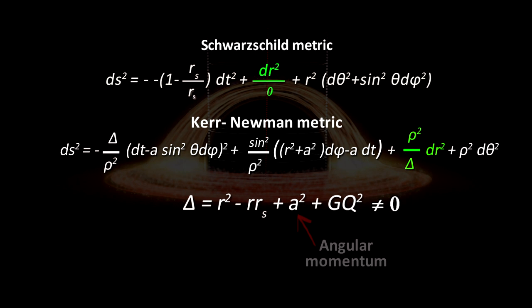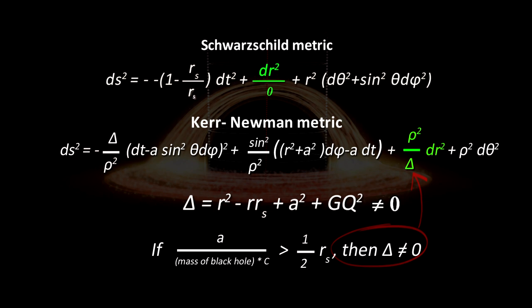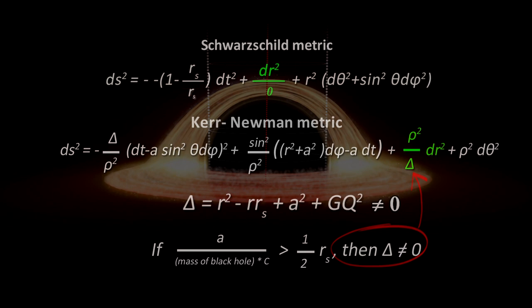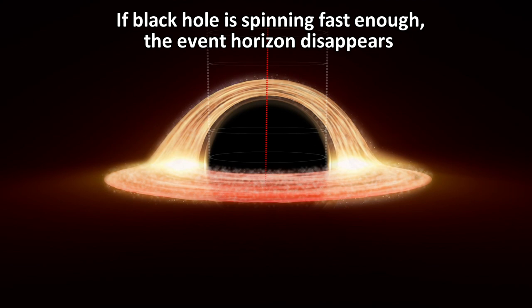In other words, if the black hole is spinning fast enough, the event horizon disappears. It is then no longer a black hole, but a naked singularity. A naked singularity is just a singularity with no event horizon. Now, why is this important?